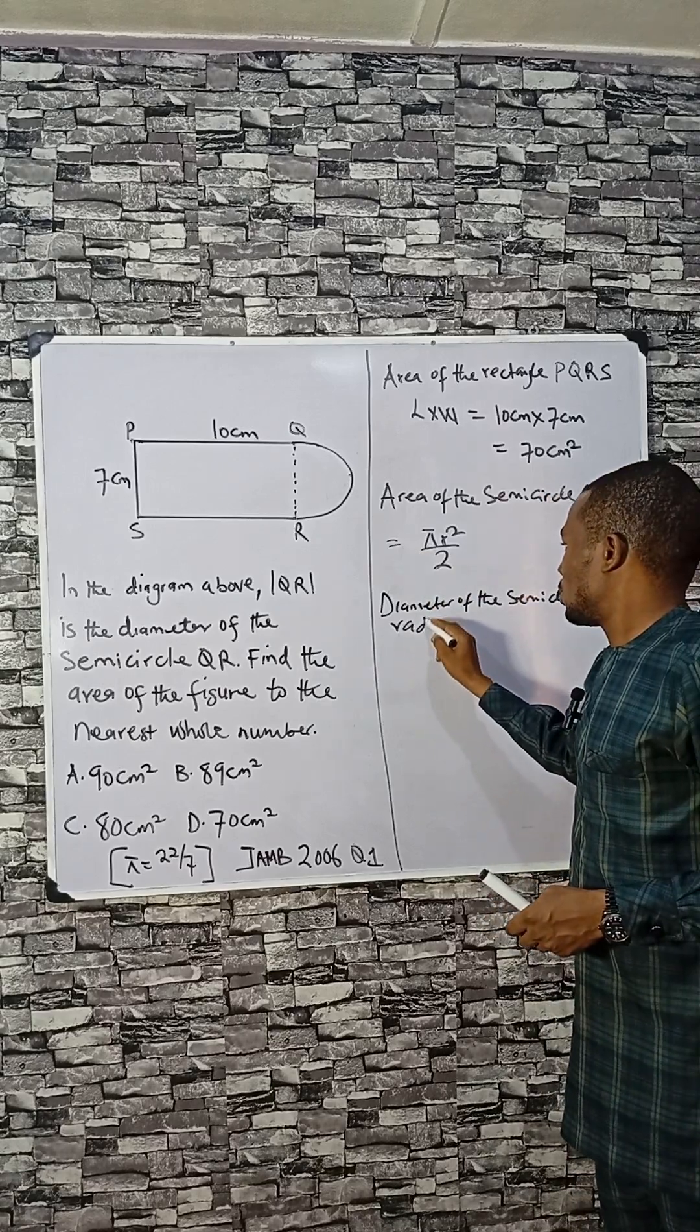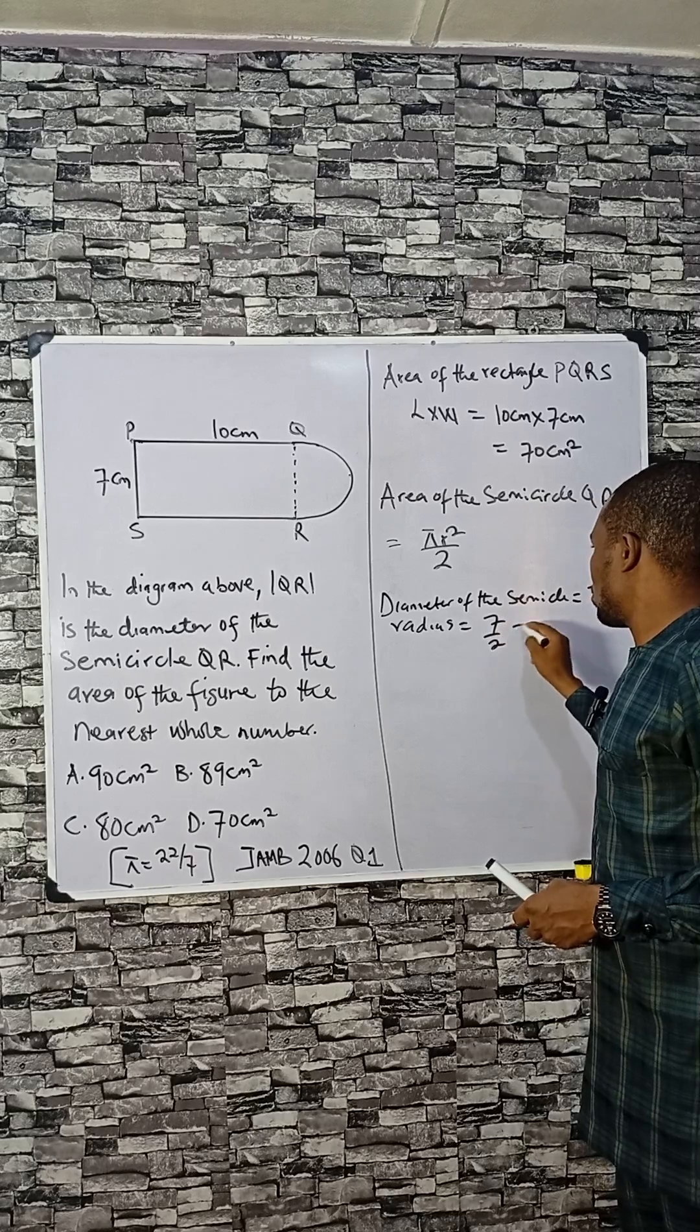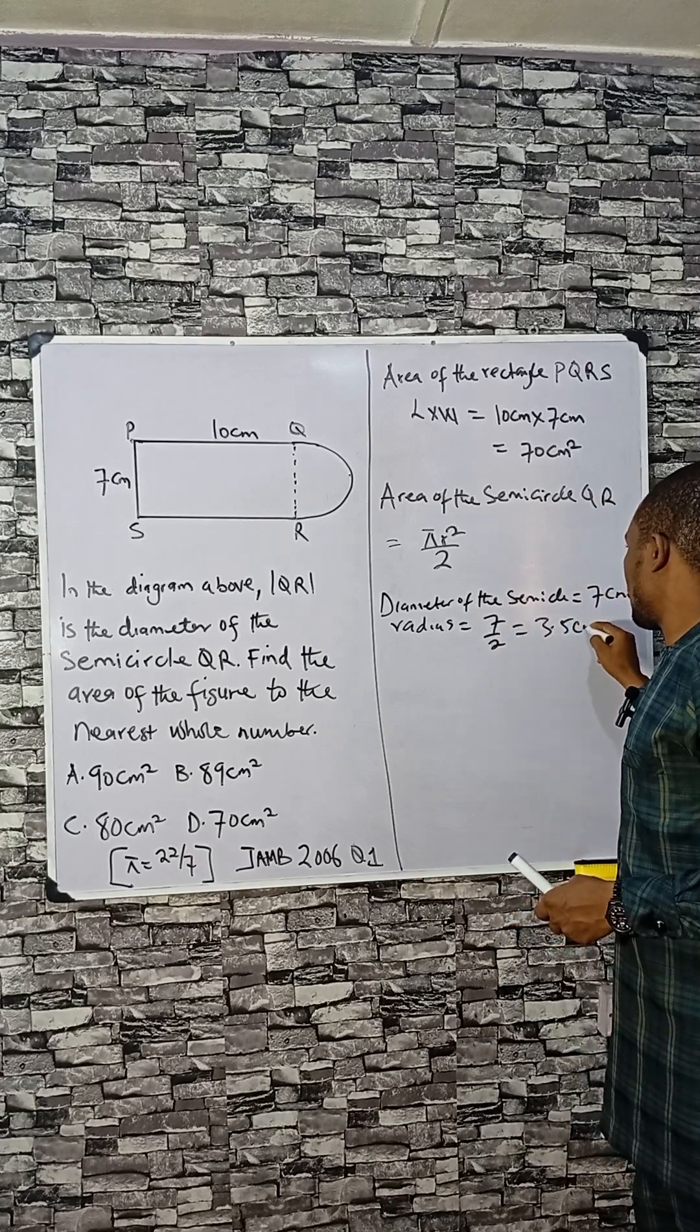The radius is 7 divided by 2, which is 3.5 cm. So let's calculate.